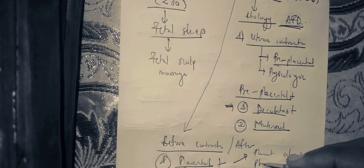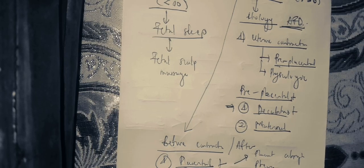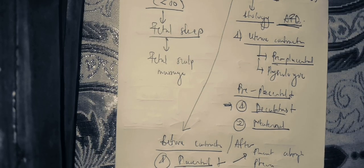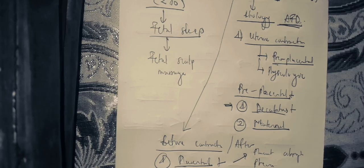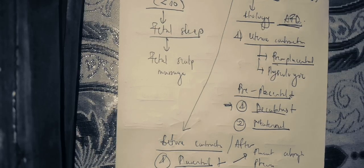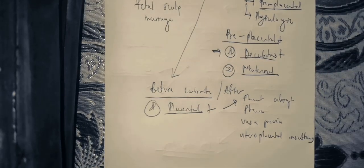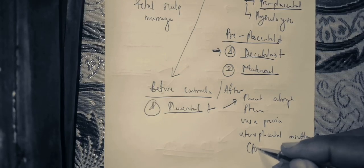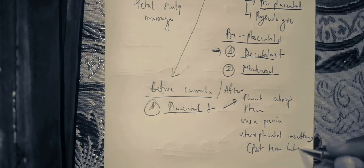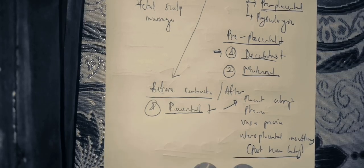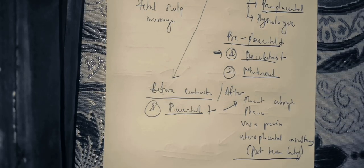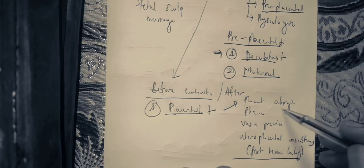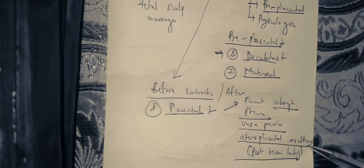The placental etiologies are: placenta abruptio, placenta previa, vasa previa, and uteroplacental insufficiency — for example in post-term pregnancies. So when you have an acceleration before or after a uterine contraction, the cause is either abruptio, placenta previa, vasa previa, or uteroplacental insufficiency.